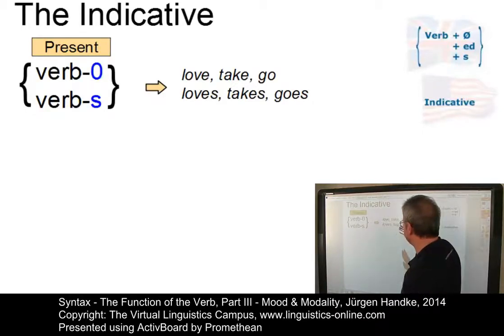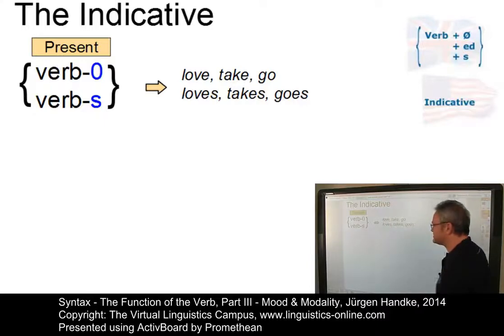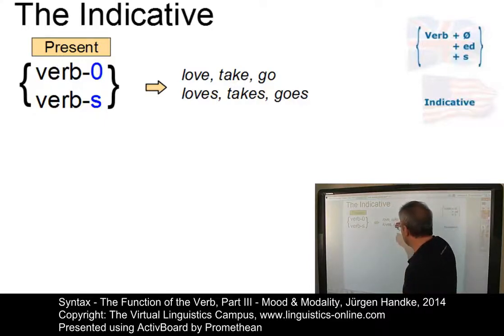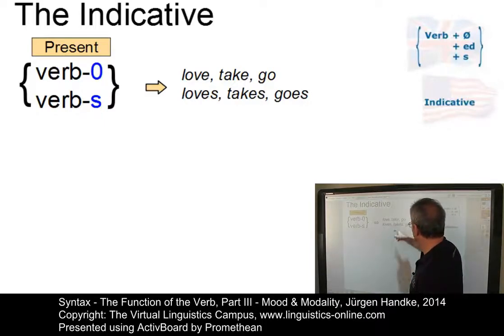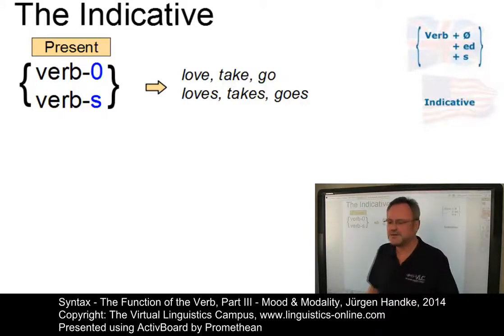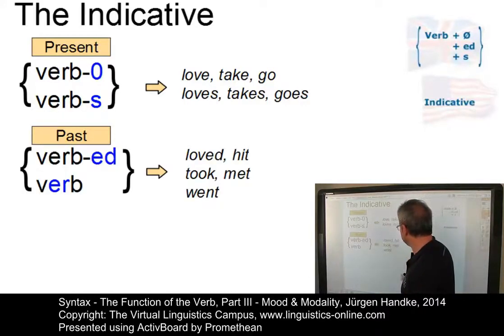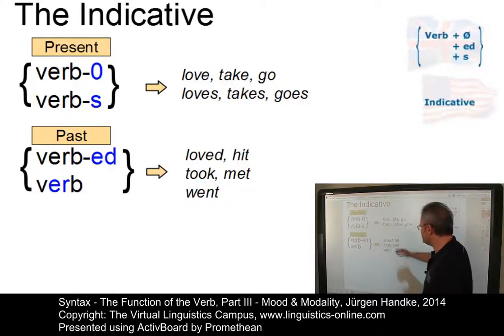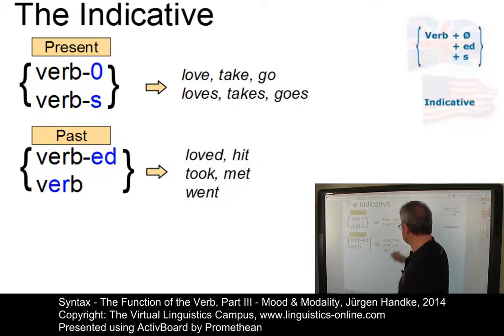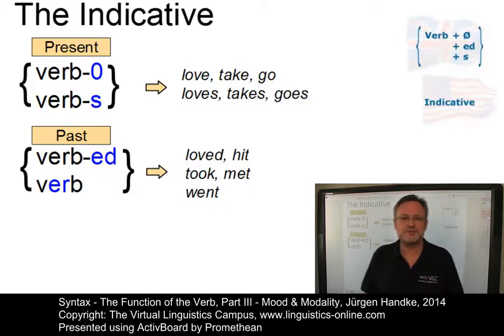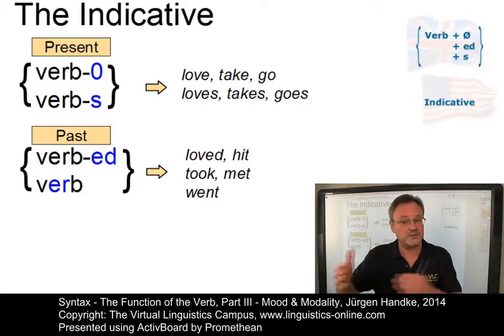The unmarked mood in English is the indicative mood. Its formal realization, leaving aside complex verb groups, is that of the standard inflectional paradigm for tense. In the present tense, formed by means of affixation — either zero affixation or the third person singular -s — as in 'love, take, go' versus 'loves, takes, goes'. And in the past tense, formed by affixation ('loved'), zero affixation ('hit'), base change ('took', 'met'), or even suppletive forms ('go' versus 'went').